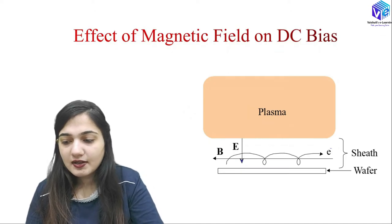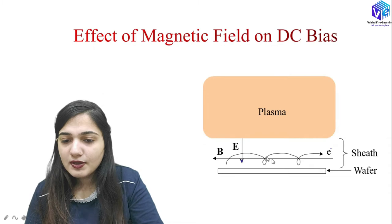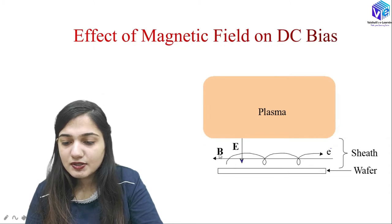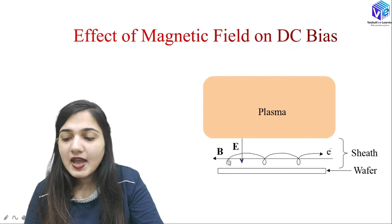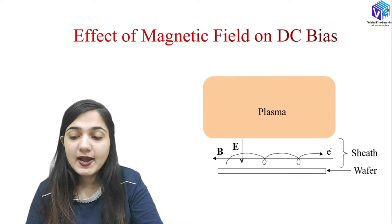In the diagram, the sheath layer and wafer are shown with the magnetic field B in a particular direction. The circular path traveled by the electron due to the magnetic field results in reduced ion energy reaching the wafer surface.